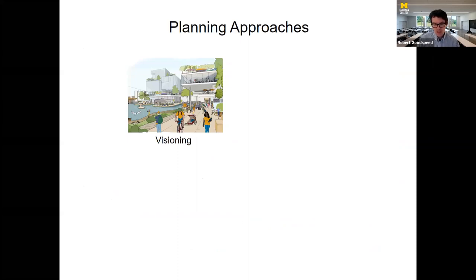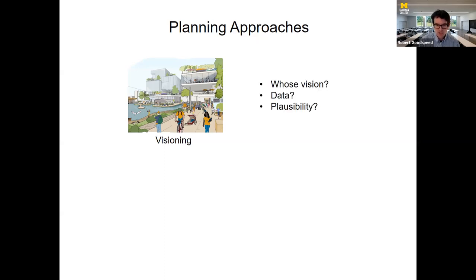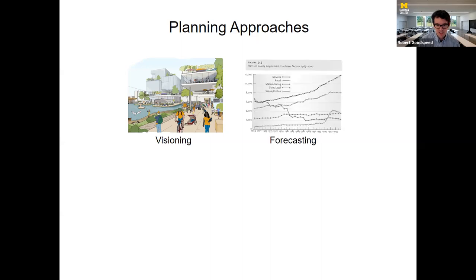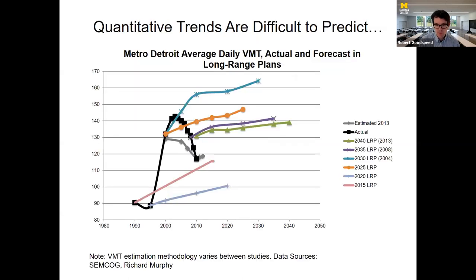I want to discuss four antecedent and related planning approaches. This is a high-level map, but as students and practitioners you'll bump into passionate advocates of each. First, the most common approach is visioning — a lot of designers work in this mode. The critiques are: whose vision? What data or analysis is the vision based on? Is it feasible or just a pretty drawing? The mirror image to visioning is forecasting — often quantitative and focused on predicting the future. In the social sciences there's Philip Tetlock's work in super-forecasting and great interest in the possibility of forecasting the future.